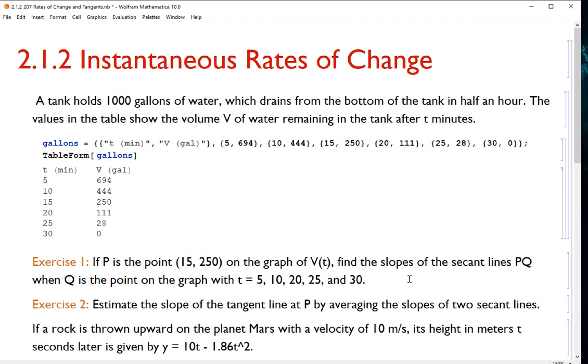We want to find the slopes of the secant lines PQ. When we're going to let Q vary, it's going to be all these different times 5, 10, 20, 25, and 30. So I don't know exactly what V of T looks like algebraically. All I have is some values that I could plot, and I'm trying to find the secant lines with a fixed point in time 15 compared to the others around it. And what I'm trying to do is get an idea of how quickly is the water draining out at 15 minutes.